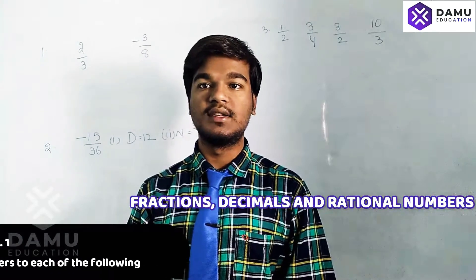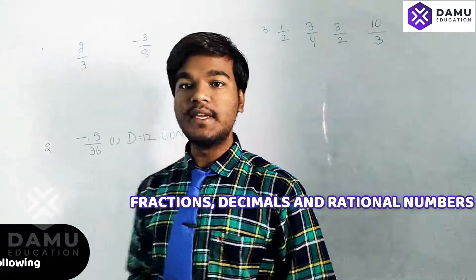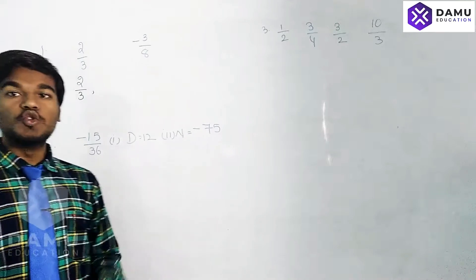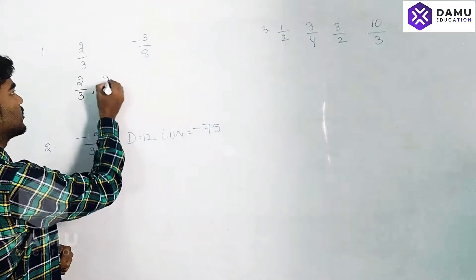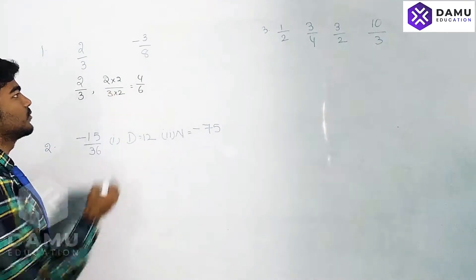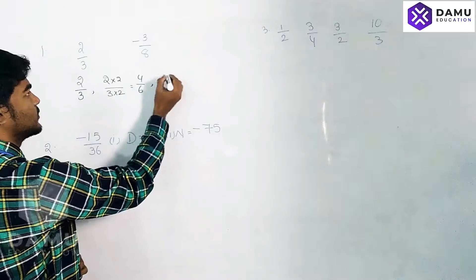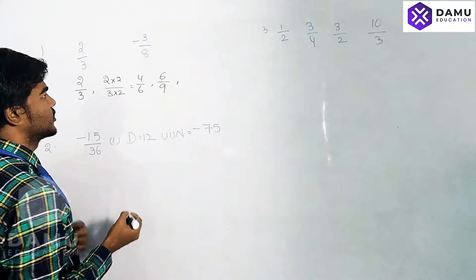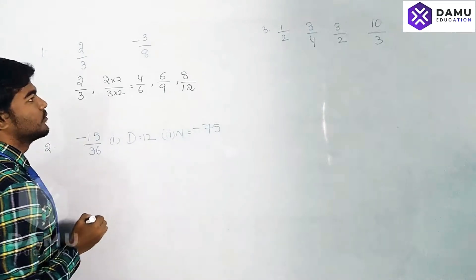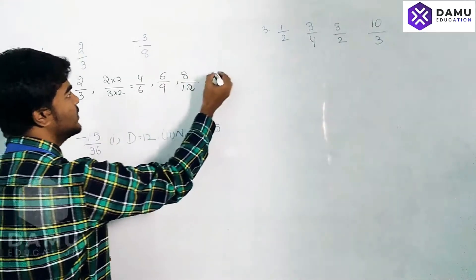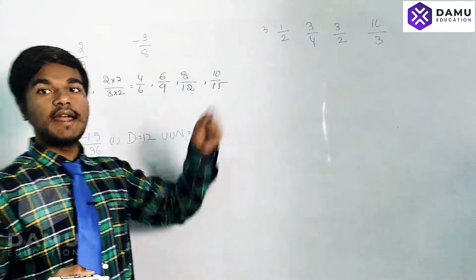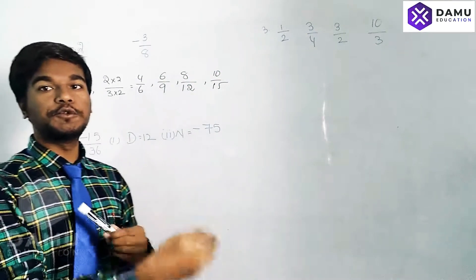So here, for 2/3, we write: 2/3, then 2/3 × 2/2 = 4/6. Next, 2×3=6 and 3×3=9, giving 6/9. Then 2×4=8 and 3×4=12, giving 8/12. We keep going up to ×5, getting 10/15. In the numerator we're adding 2 each time, and in the denominator we're adding 3 each time.